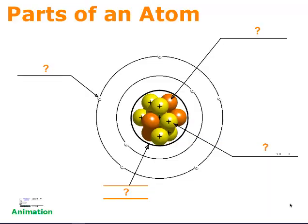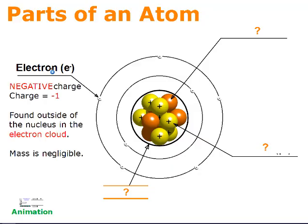The atom contains three subatomic particles. The first has a negative charge and it's the electron. Electrons have a negative charge, they're found outside the nucleus in the electron cloud, and their mass is so small that we say it's negligible — meaning basically zero. Make sure that you're writing this down and labeling the electron.